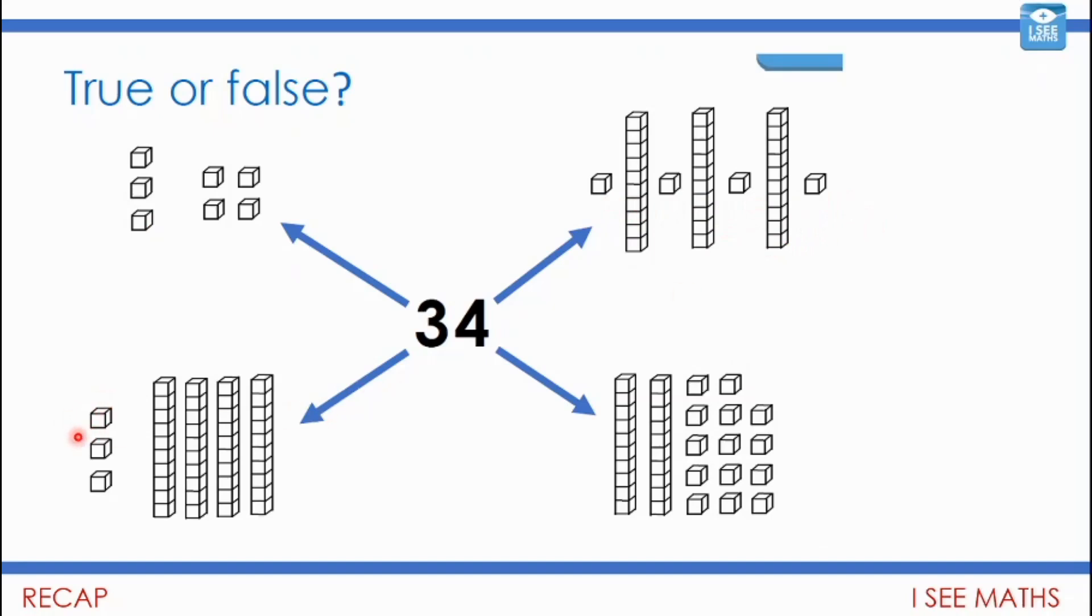This one here isn't 34. The tens and the ones have been put the other way around than they would normally be shown. But we've got 43, four tens and three ones. And this one is 34 here because I've got 10, 20. I've got 30 if I add up those ones there. And four, 34.